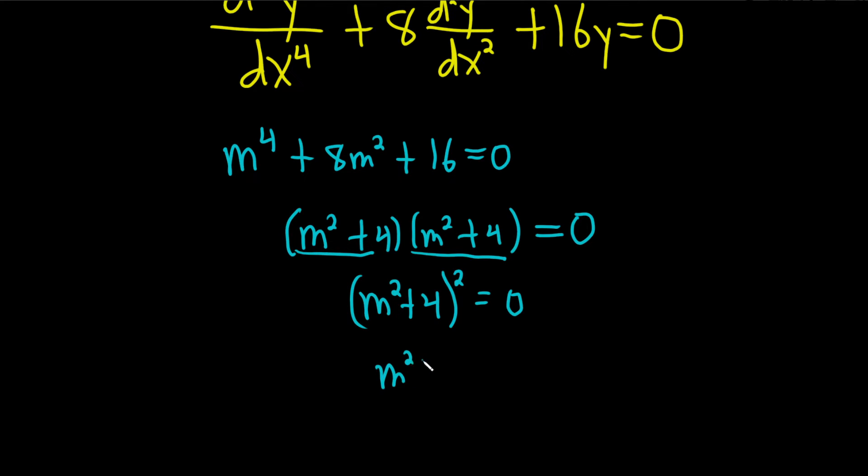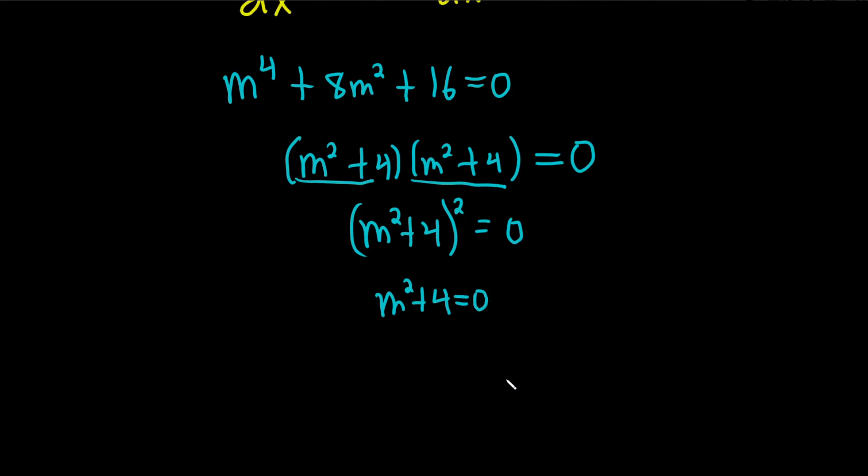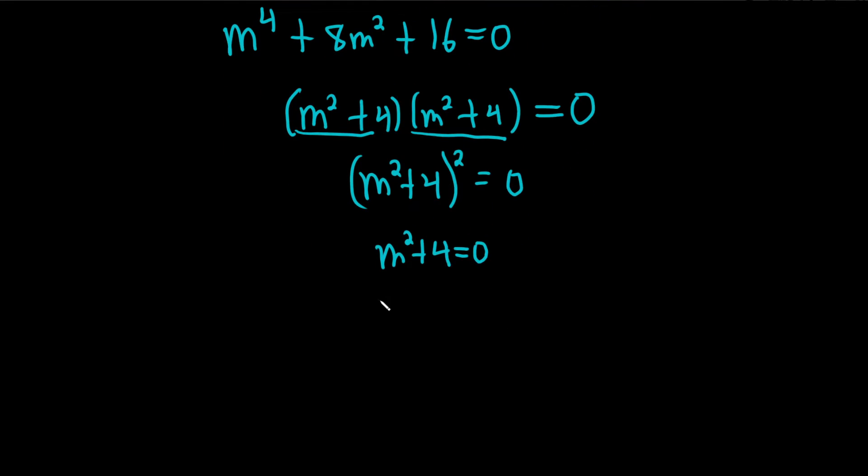So you just set this equal to zero. And then you solve for m, so subtract the 4. That gives us m squared equals negative 4. And to get rid of the squared, you take the square root, take the square root.